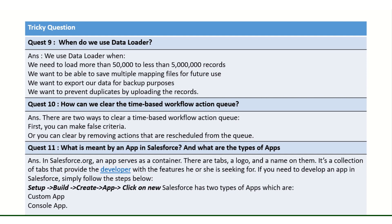Another question: what is an app in Salesforce and what are the types? An app is basically a container — it has a collection of tabs. It segregates all the tabs that you want for your specific application. You can name it and add a logo. We have two types of apps: Custom App and Console App. That's all for today, and I will come up with scenario-based questions next which will be very helpful for everyone to understand Salesforce completely. Thank you.